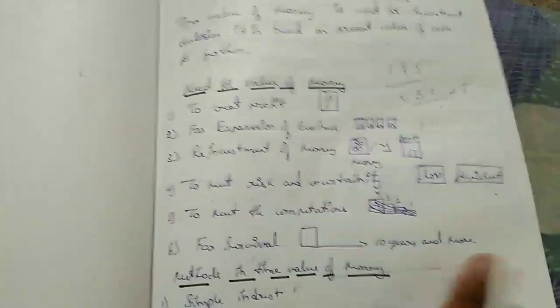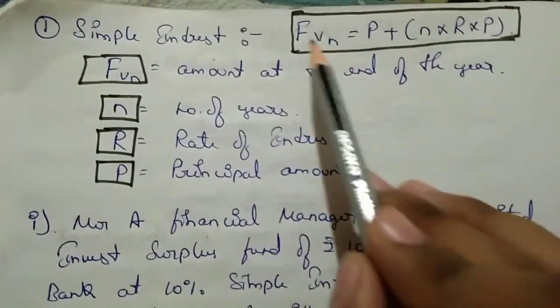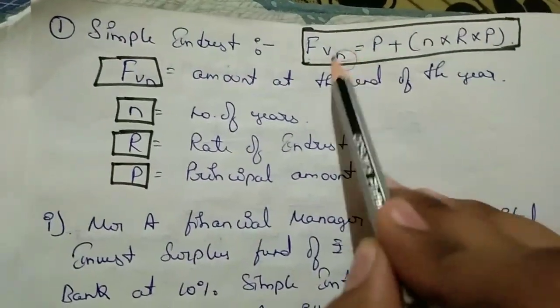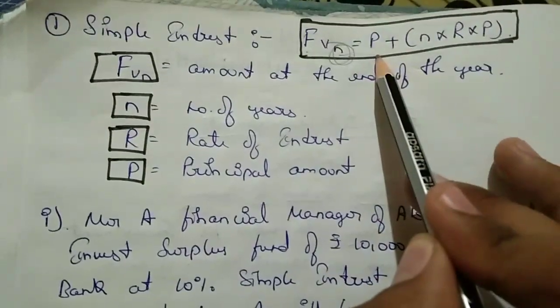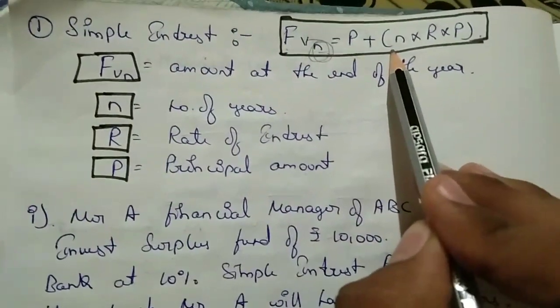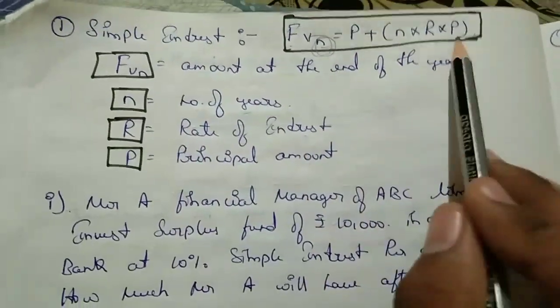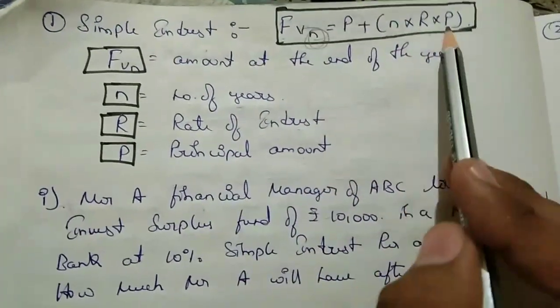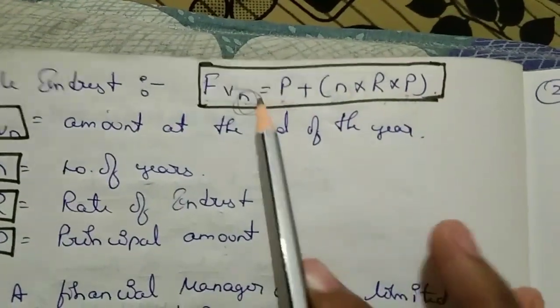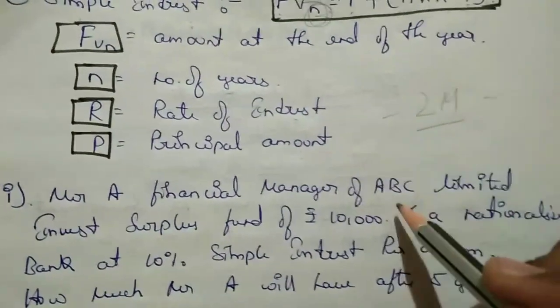Let's move to the next. Here I have created something called simple interest. Simple interest - there is a formula. Future value FVn is equal to P, principal amount, plus bracket n into R into P. N is number of years, R is rate of interest, P is again principal amount. So here two times you will put the principal amount for simple interest. This may be asked for two marks, not more than two marks. If they ask, they will ask simple interest and compound interest together for six marks.